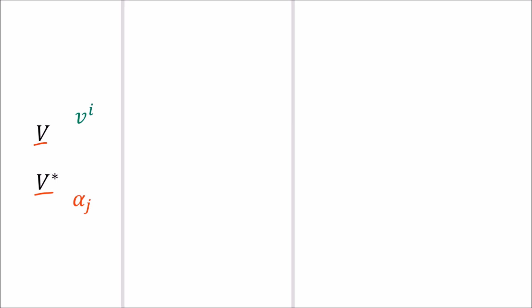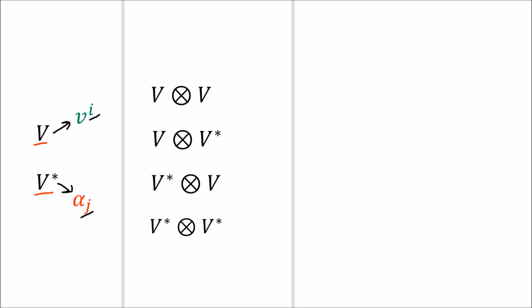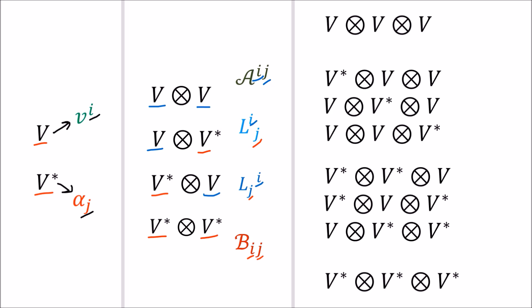The basic building blocks are the two vector spaces V and V*, containing tensors whose components have upstairs and downstairs indexes respectively. We can combine these into new vector spaces using the tensor product, and these new spaces have components with corresponding combinations of upstairs and downstairs indexes. We can continue to make larger and larger vector spaces this way, and all of them contain tensors with components that have different combinations of upstairs and downstairs indexes depending on whether they are constructed using V or V*.